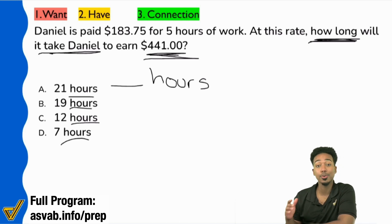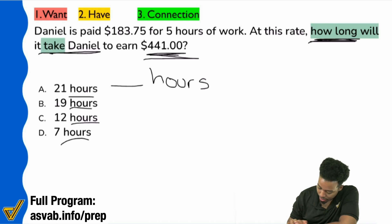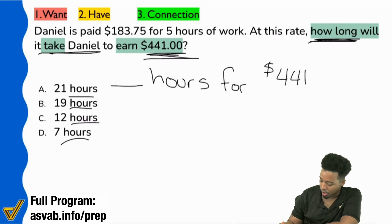Right. The $441 is what we want to look at because they tell you right over here, at this rate, how long will it take to earn $441? Those two pieces of information are connected. And so blank hours for $441. Is that correct? The number of hours that we're looking for is connected to $441. Making sure that we're good there.